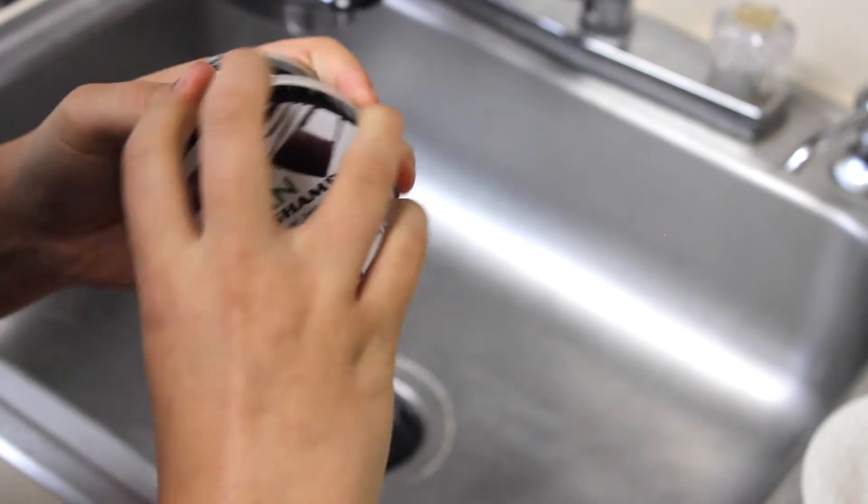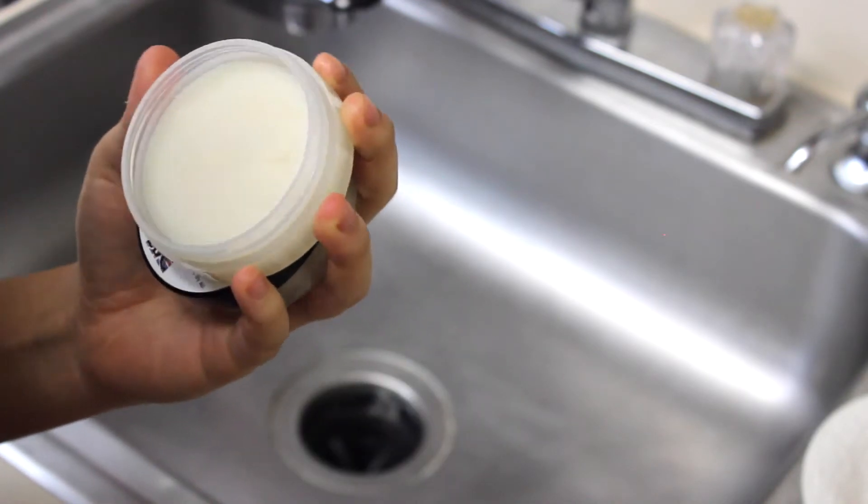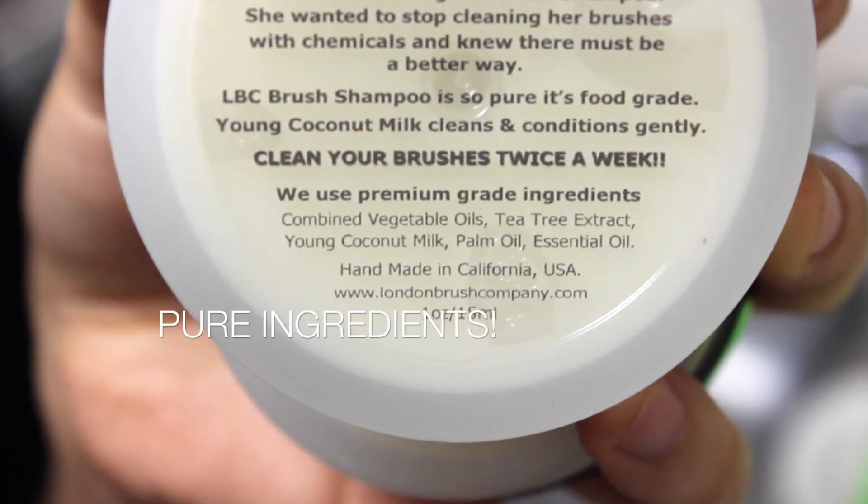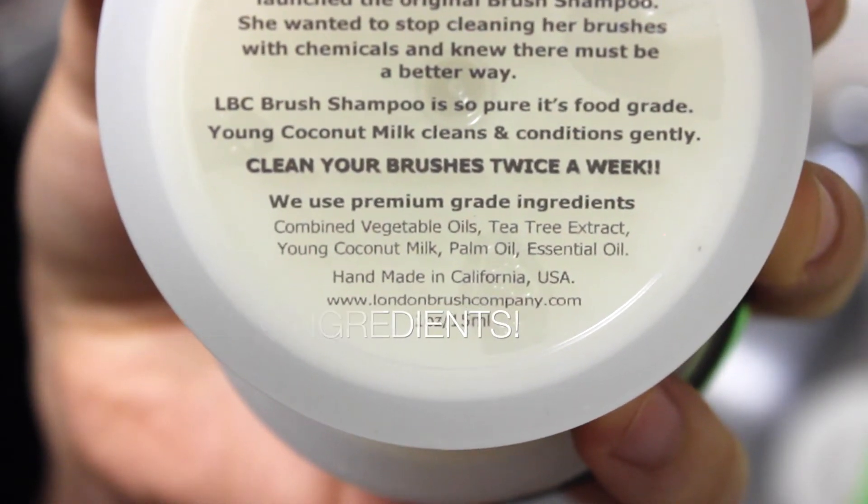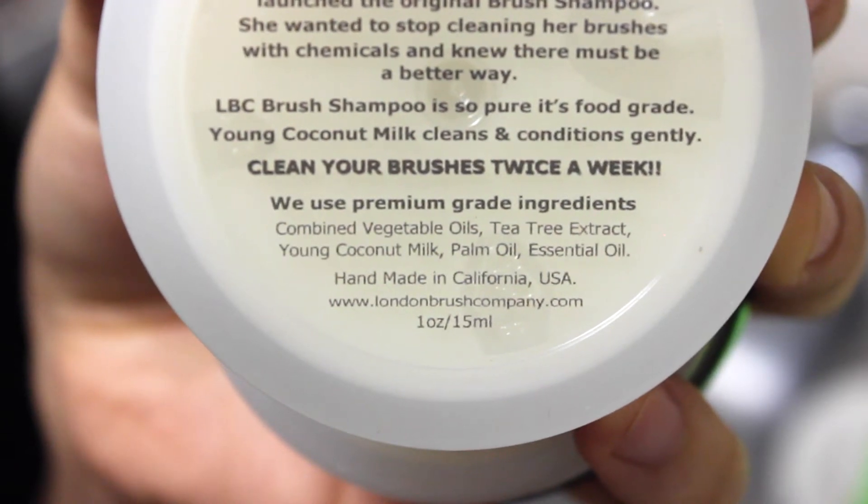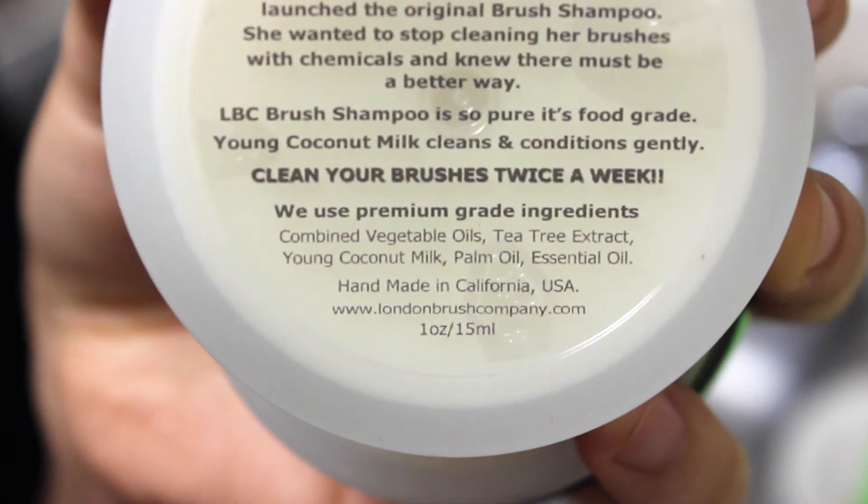I haven't used the vegan one yet but as you can see this is how they come and they smell delicious. Look at the ingredients, look how pure they are. The only difference between the vegan and the goat milk is that the goat milk contains goat milk and the vegan contains young coconut milk. Everything else is the same.